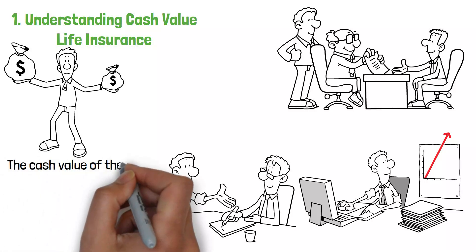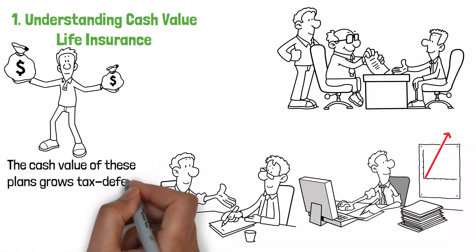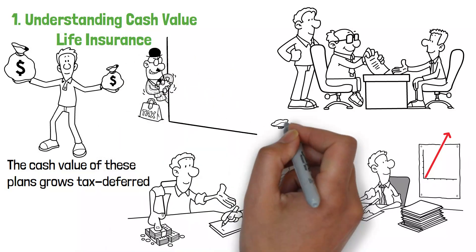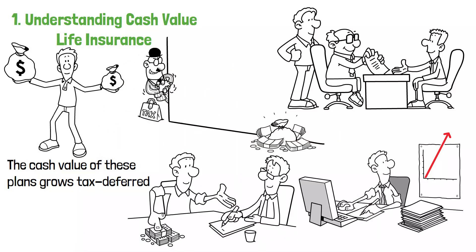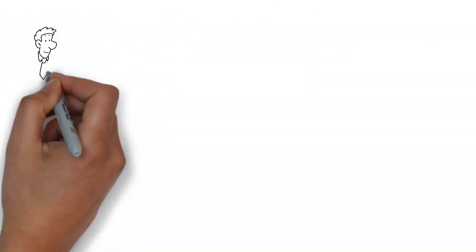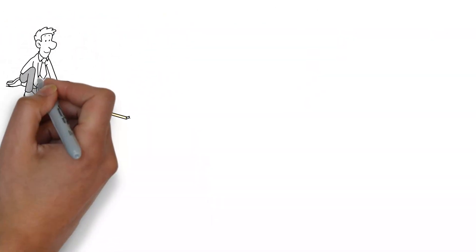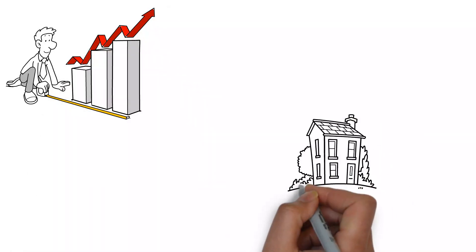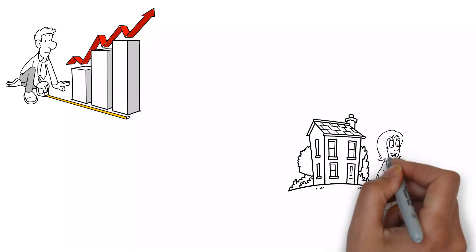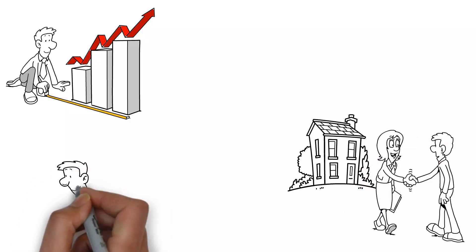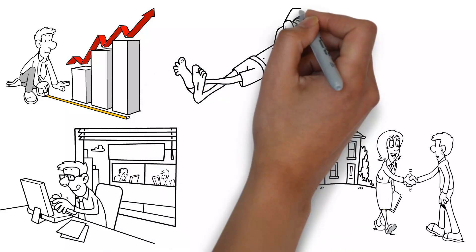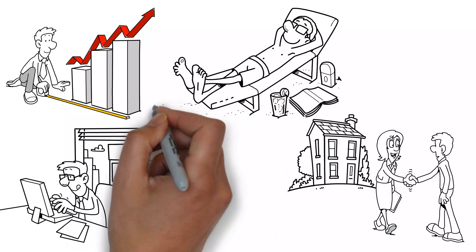The cash value of these plans grows tax-deferred, which means you will only pay taxes on the growth once you remove the funds. This enables the monetary value to compound over time, possibly resulting in a significant increase. You may utilize the accrued cash value to cover large costs like purchasing a house, paying for college, or establishing a company. Furthermore, if correctly maintained, the cash value may provide tax-free retirement income.